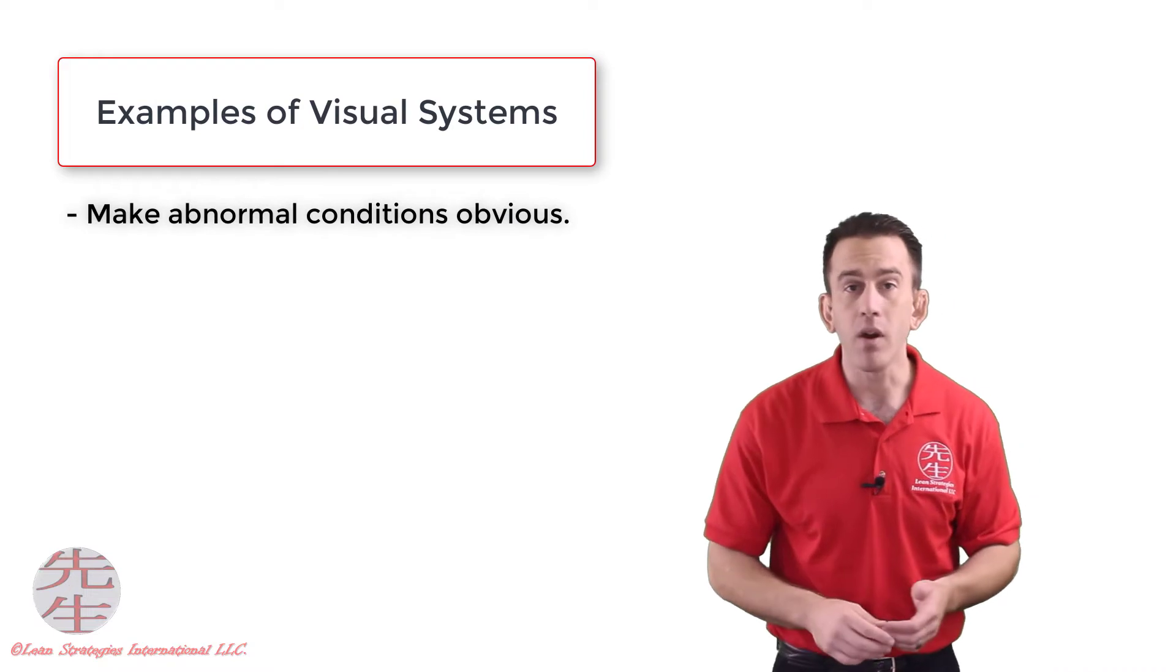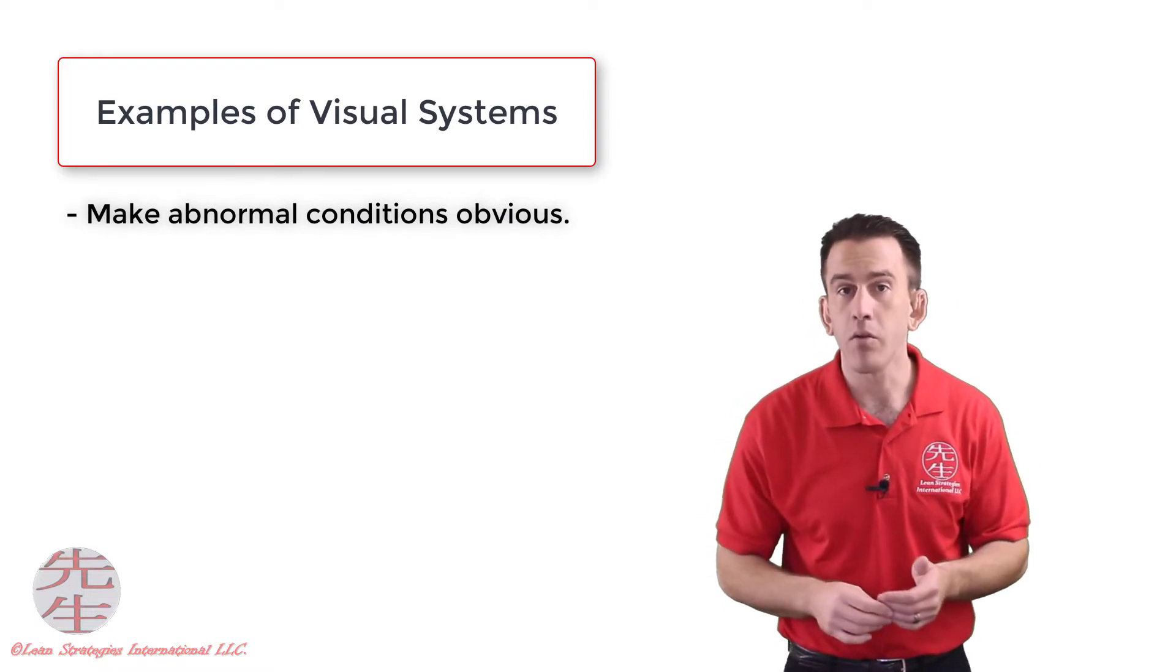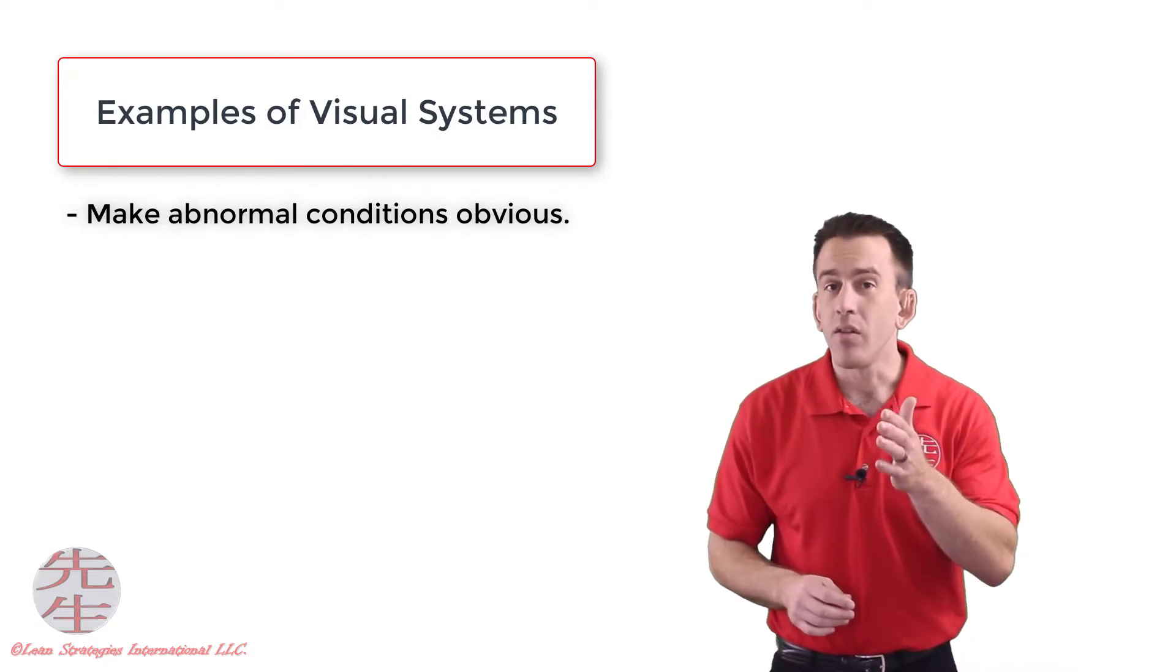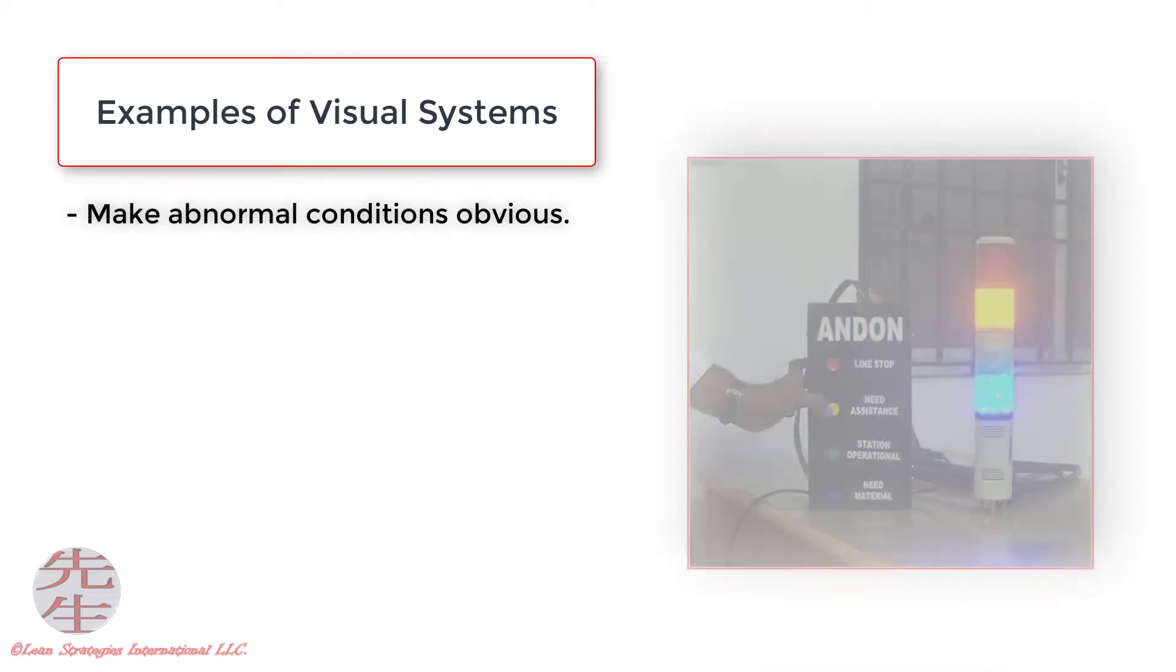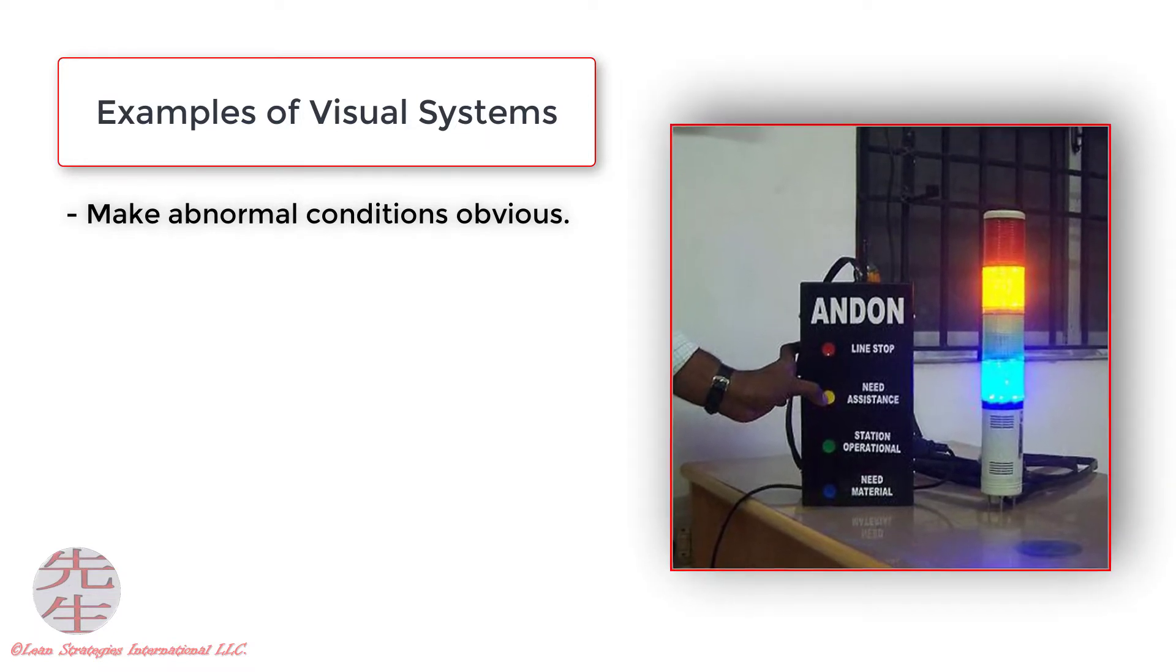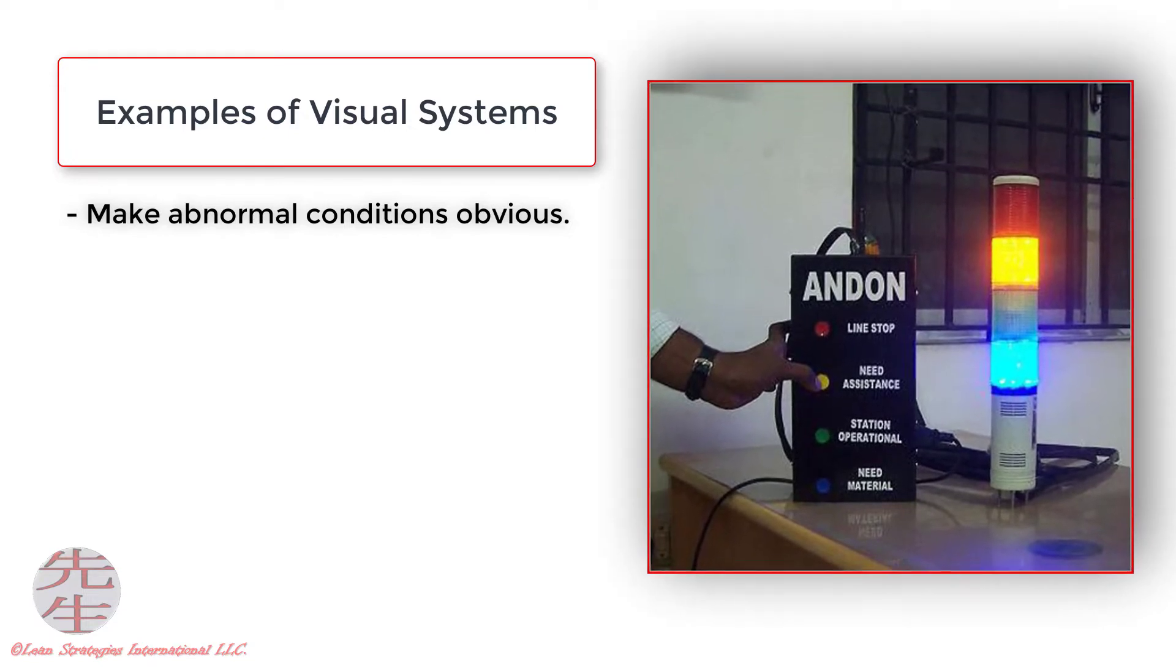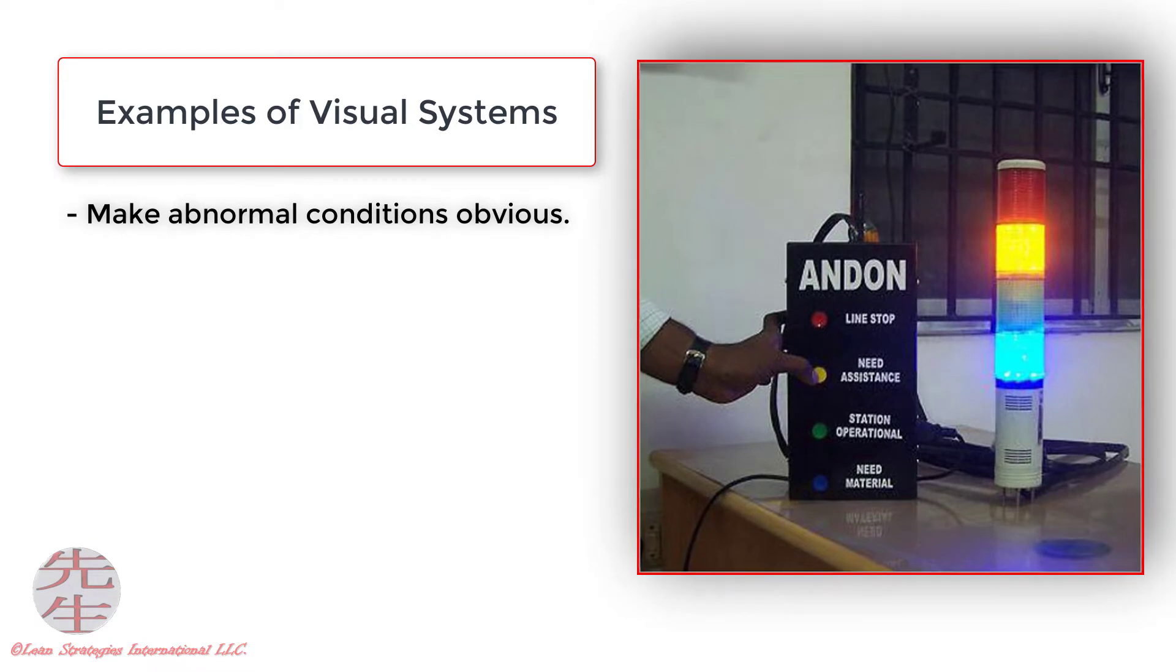One of the main reasons a visual is used in a work environment is to make abnormalities obvious, such as a deviation from a standard. One example of this type of visual control might be this andon light shown on a machine. As you can see, the andon light flashes red when a line has been stopped and a worker needs support in correcting the abnormality.